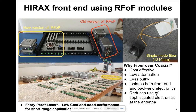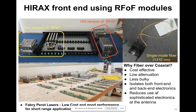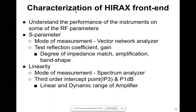Fiber also reduces the use of sophisticated electronics such as digitizers — for example, the old system at the trial uses digitizers on the antenna. The type of laser we're using is a Fabry-Perot laser, which is cost efficient and performs well for short-range applications, though there are also other options such as distributed feedback lasers.